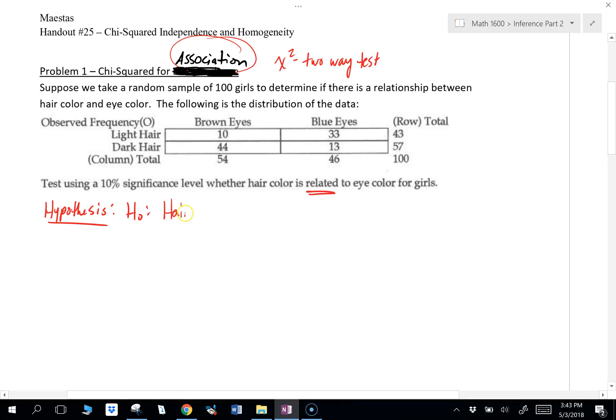So remember what I told you just a second ago, our null hypothesis is going to be that there is no relationship, or there is no association, or I could say that the two variables are independent. So I'm going to write that out. Hair color is not related to eye color for girls. Now you can call those independent. You can say hair color and eye color are independent. Or you can say there is no association between hair color and eye color for girls. And I just want to mention that because it might look a little different depending on the context that I give you on your homework, lab, or test.